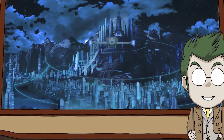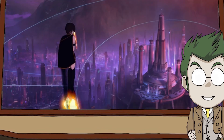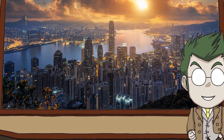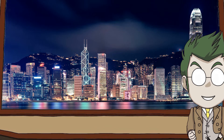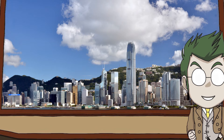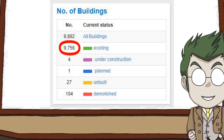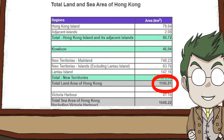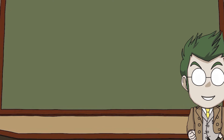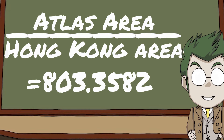Atlas's skyline is full of skyscrapers and high-rise buildings and it may look like something that could only exist in fiction. But look at Hong Kong's skyline and you will see an extremely similar view. So let's use Hong Kong to calculate Atlas. Hong Kong has 9,756 buildings over an area of 1,106 kilometers, as you can see here. So if we divide Atlas's area by Hong Kong's area, we find it is 803.3582 times bigger by area.